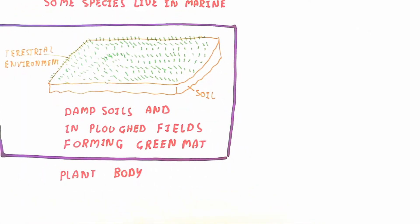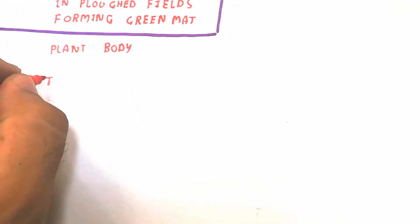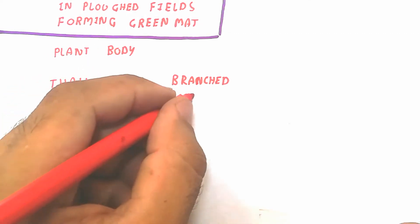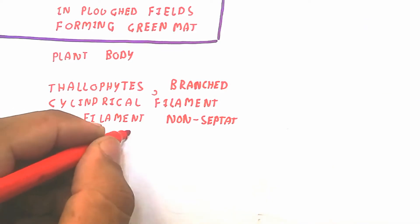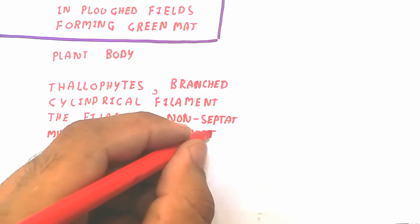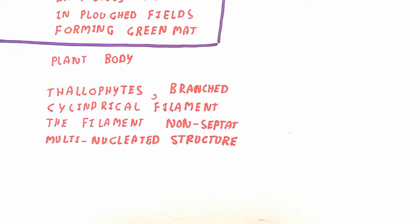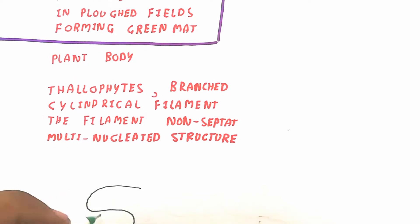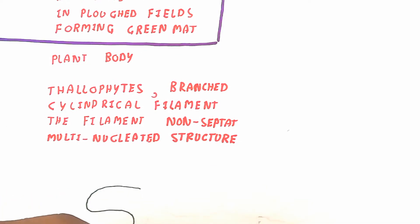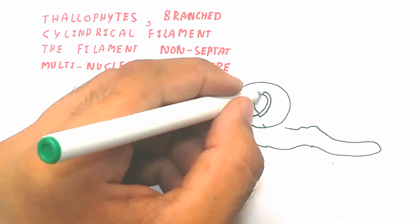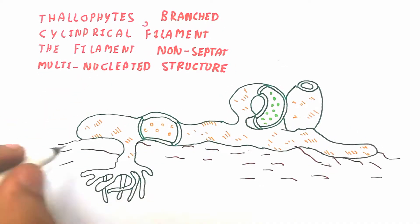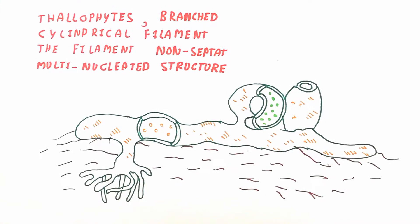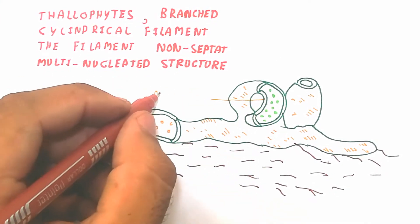Now we will talk about the plant body. The plant body is a thallophyte — that is why it is known as Thallophyta. Thallophyta means the plant is not differentiated into leaf, fruit, stem, etc. The plant body is a cylindrical filament that is non-septate and multi-nucleated, meaning more than one nucleus is present in the whole cylindrical structure.